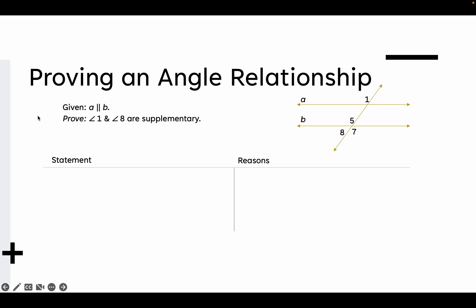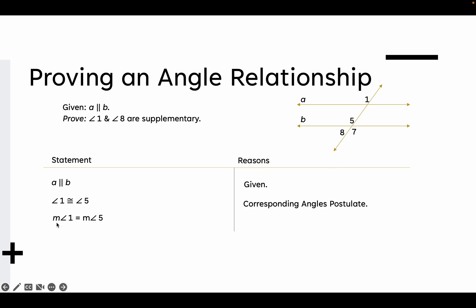Let's prove this next statement. We're going to try to prove that angle 1 and angle 8 are supplementary. We're given that A is parallel to B — the reason is that it was given. We also know that angle 1 is congruent to angle 5 because of the Corresponding Angles Postulate. Therefore, the measure of angle 1 must equal the measure of angle 5, because congruent angles have the same measures.